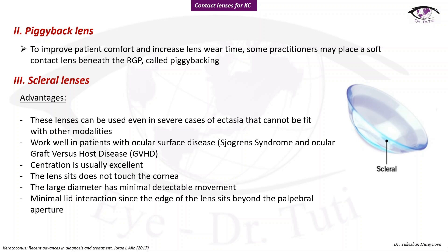Piggyback lens: to improve patient comfort and increase lens wear time, some practitioners place a soft contact lens beneath the RGP — called piggybacking. There are also scleral lenses. Advantages include use even in severe cases of ectasia, works well in patients with ocular surface disease, perfect centration, the lens does not touch the cornea, large diameter with minimal detectable movement, and minimal lid interaction since the edge of the lens sits beyond the palpebral aperture.